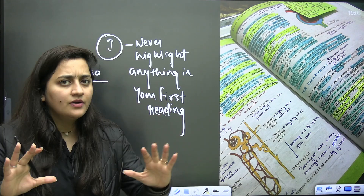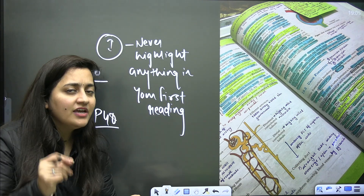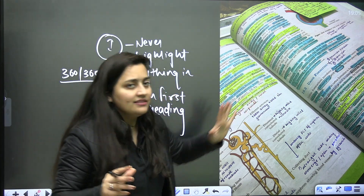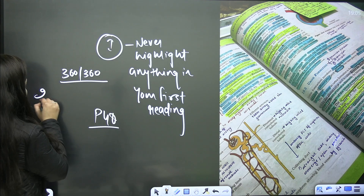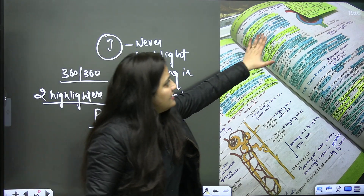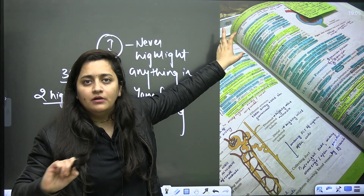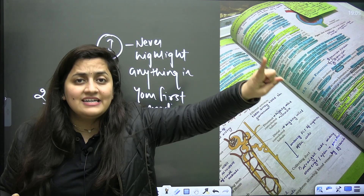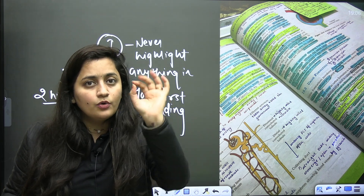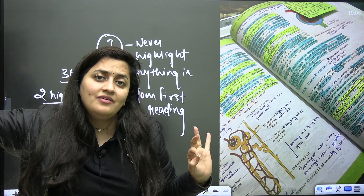Once you've studied one chapter and solved the PYQs, you know the important statements, topics, and lines — then start highlighting your NCERT. I suggest using two highlighters. One highlighter for statements that are the most important or from where a PYQ has directly come in the paper. Use this particular highlighter throughout your entire biology, 11th and 12th, even for physics and chemistry, to highlight statements that were directly asked as PYQs.